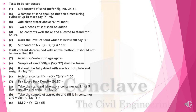Moisture content test: Take a 500g sample of sand (X). Fully dry it in an electrical oven and weigh it (Y). Moisture content = (X - Y) / Y × 100. DLBD test: Take a standard 5-liter laboratory container and weigh it (X). Fill it with aggregate sample and weigh (Y). DLBD = (Y - X) / 5.